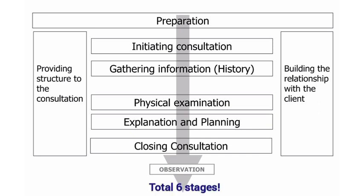The model falls into six distinct stages. The first stage is the preparation stage, and that is very much finding out what is known about the client and the patient. That can be found by either looking up the records already held by the practice, or by asking the receptionist what information was given when they arrived.